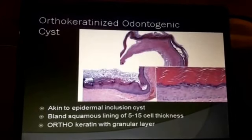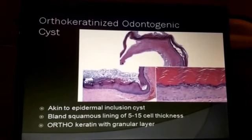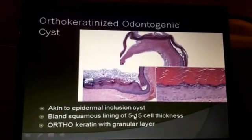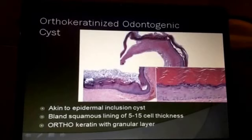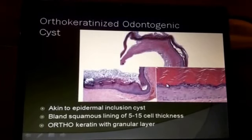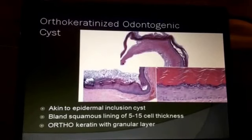The orthokeratinized odontogenic cyst is another lesion, really analogous to an epidermal inclusion cyst. It tends to have a slightly thicker cell layer and makes orthokeratin, meaning it has a granular layer. Finding that granular layer can, in and of itself, allow you to make the diagnosis of orthokeratinized odontogenic cyst.